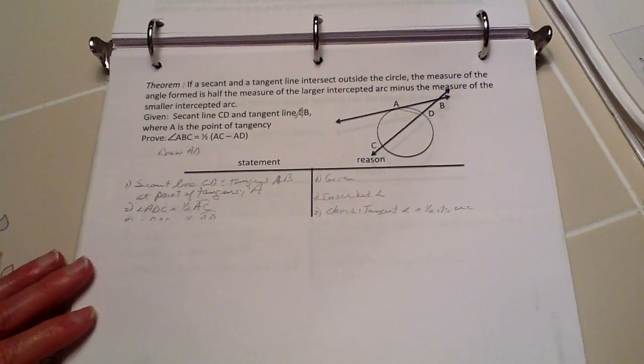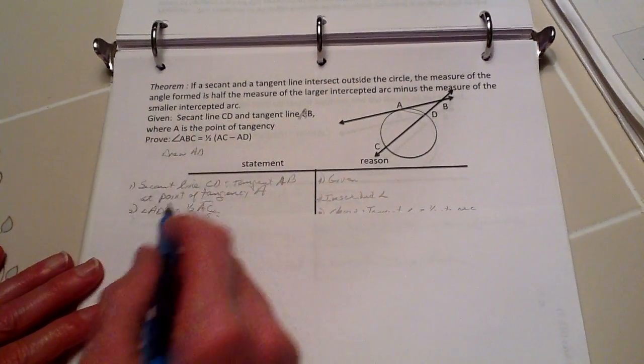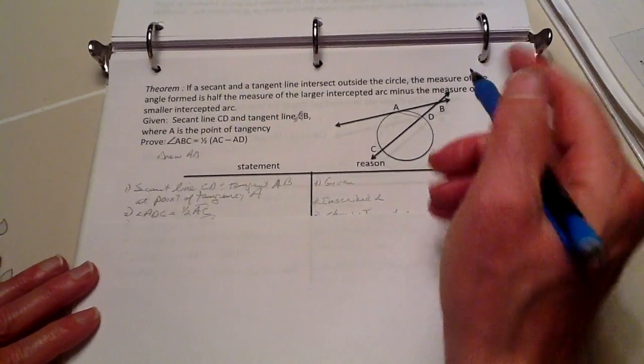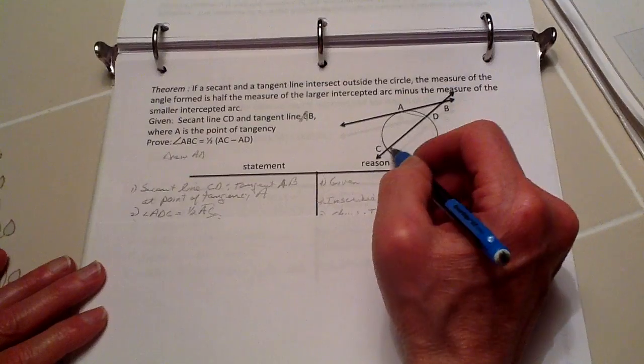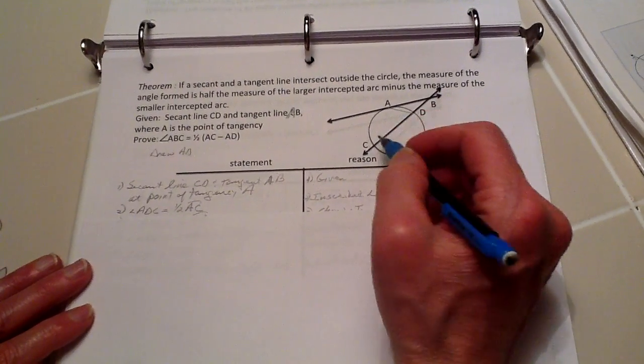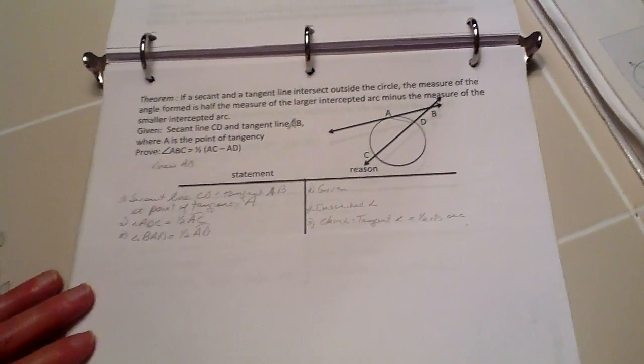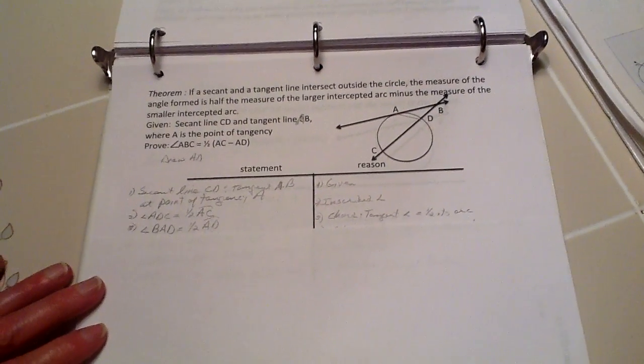So, I've drawn the line AD. Again, we restate the given, and now we know that this angle ADC is going to equal one-half this arc because of the inscribed angle theorem.